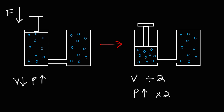So on the left side, we have a region of high pressure, and on the right side, we have a region of low pressure. So air is going to flow from the region of high pressure to the region of low pressure — it's going to flow into the container on the right side.